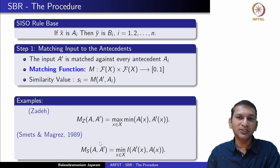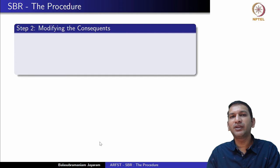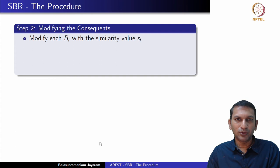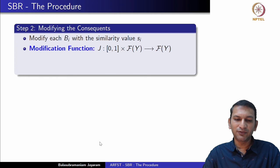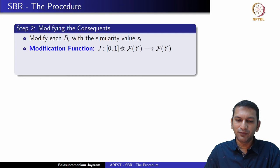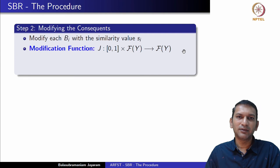Step two is using the similarity value to modify the corresponding consequent. Each rule has antecedent A_i and consequent B_i. Having matched A' with A_i and found similarity value S_i, we use a modification function J, which maps [0,1] × F(Y) to F(Y). It takes S_i and B_i and produces a modified fuzzy set B_i'. Since J acts on membership values in [0,1], we can use any binary fuzzy logic connector as the modification function.